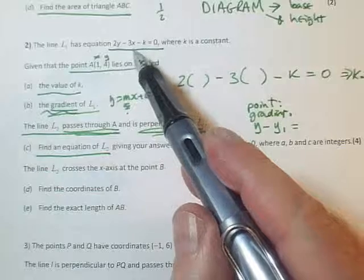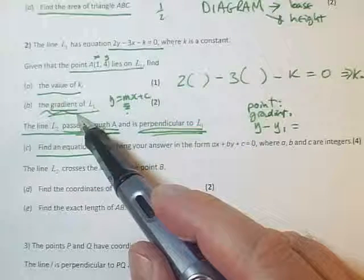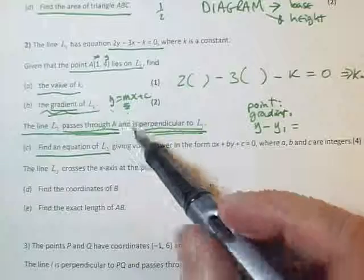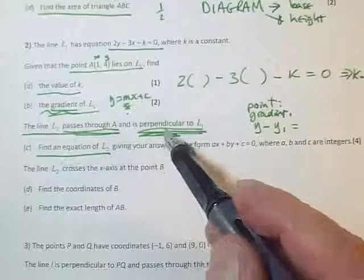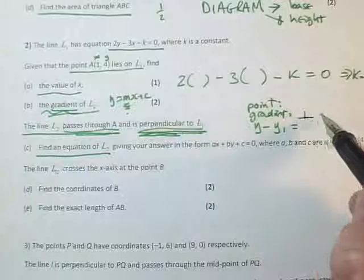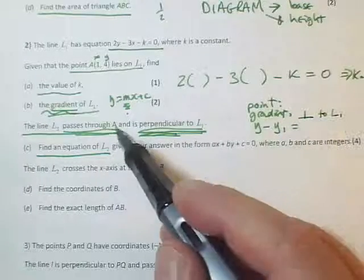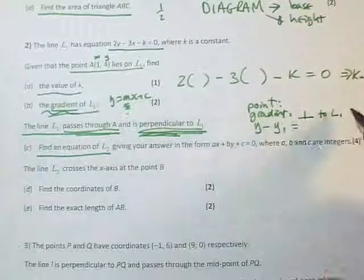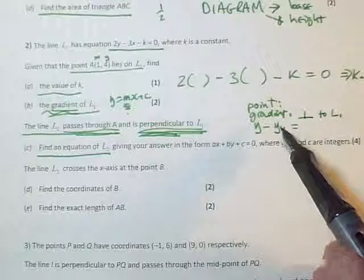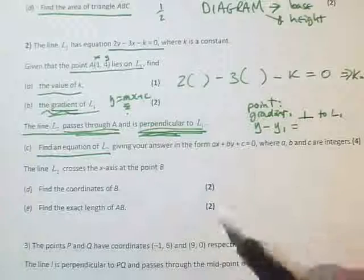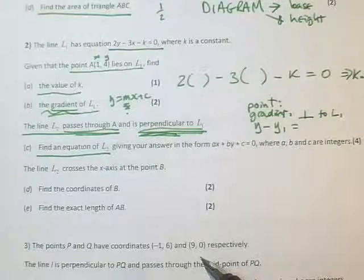Well, here was L1. Oh look, we found the gradient of L1 in the previous part. Now we need the perpendicular gradient, so we apply the method for the perpendicular gradient to L1. So we take our answer to L1, find the perpendicular gradient, get an answer for the gradient, and then with a point and a gradient, we can use the Y minus Y1 recipe. Hooray.